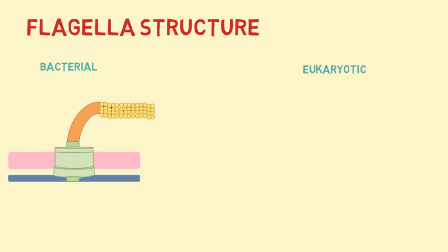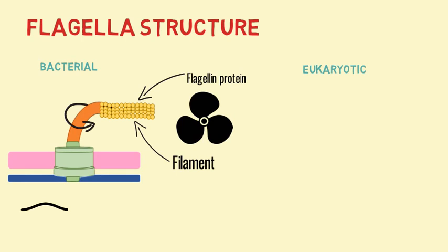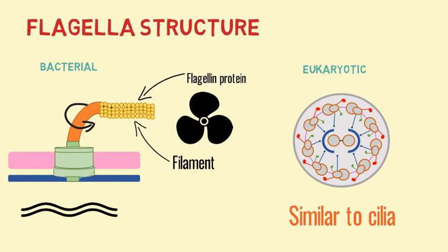Flagella are divided into bacterial flagella, archaeal flagella, and eukaryotic flagella. Bacterial flagella are made of helical filaments composed of flagellin proteins. These have a rotary motor that can be likened to a propeller, therefore beating in a wave-like motion.